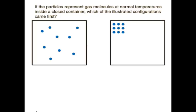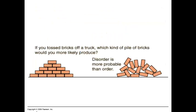So let's take the example we see here. If the particles represent gas molecules at normal temperatures inside a closed container, which of the illustrated configurations comes first? Which picture comes first? Following the second law of thermodynamics, it would be the picture on the right. The more ordered picture, which would lead to the more random or disordered arrangement of the particles on the left. This is how diffusion or osmosis works. Another example would be if we tossed bricks off of a truck, which kind of pile of bricks would you more likely produce? And the answer is the one on the right.